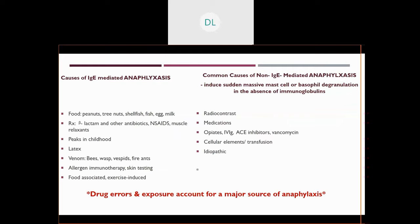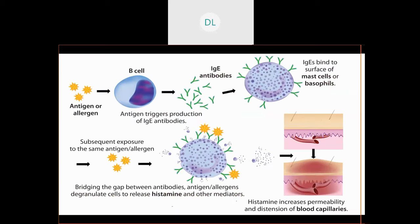Whether it's an IgE-mediated anaphylactic response or a non-IgE-mediated anaphylactic response, notice that drug errors and exposure to drugs and medications can account for a major source of anaphylaxis. An allergy is an exposure to an antigen, and our body builds up this memory of an IgE response. Subsequent exposures to that same allergen or antigen can cause histamine release, which increases permeability of our blood vessels, causing local and then systemic inflammatory response and edema. It also causes vasodilation and capillary leak.